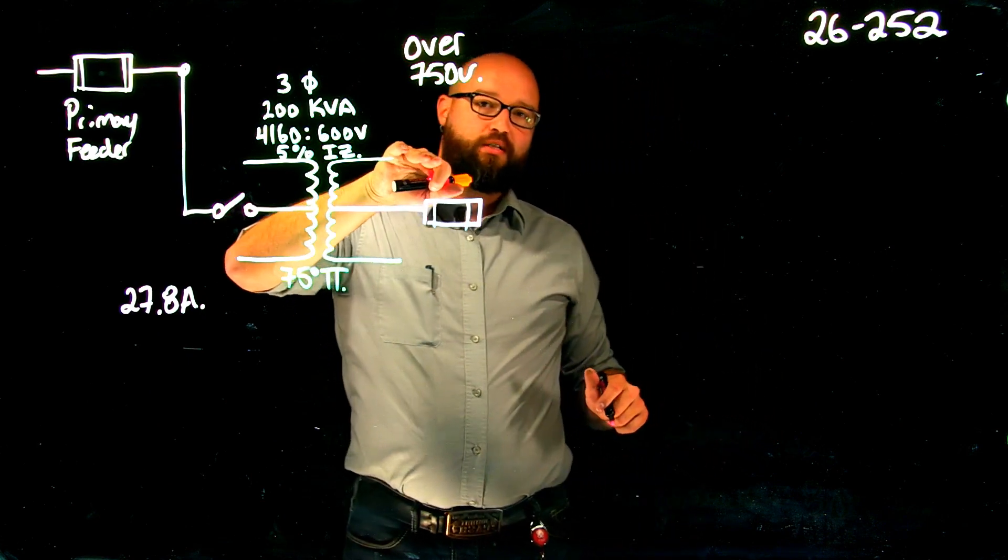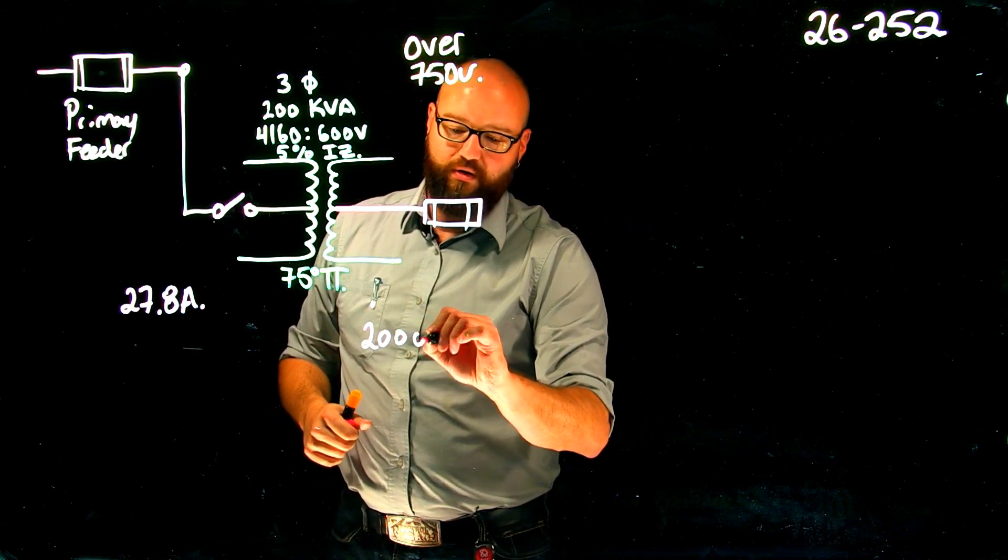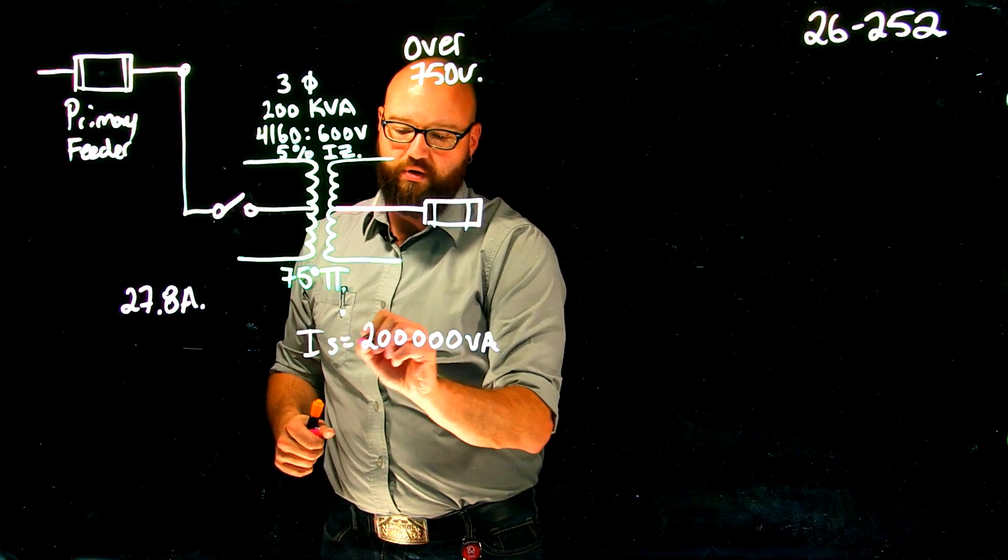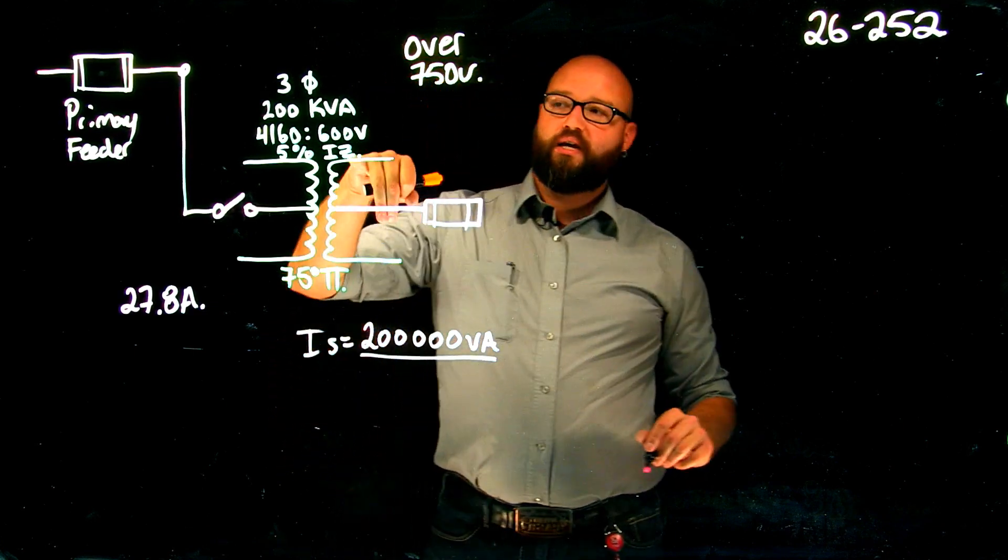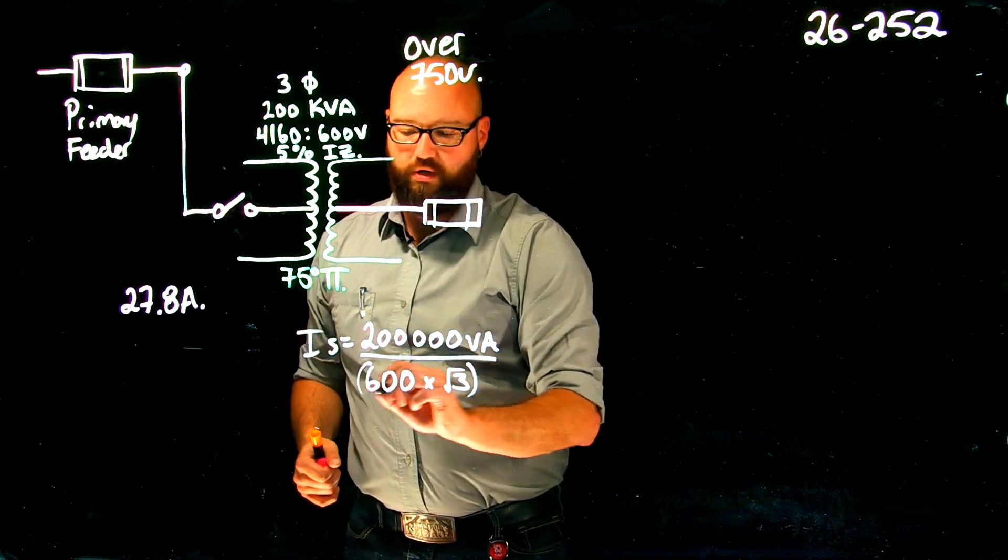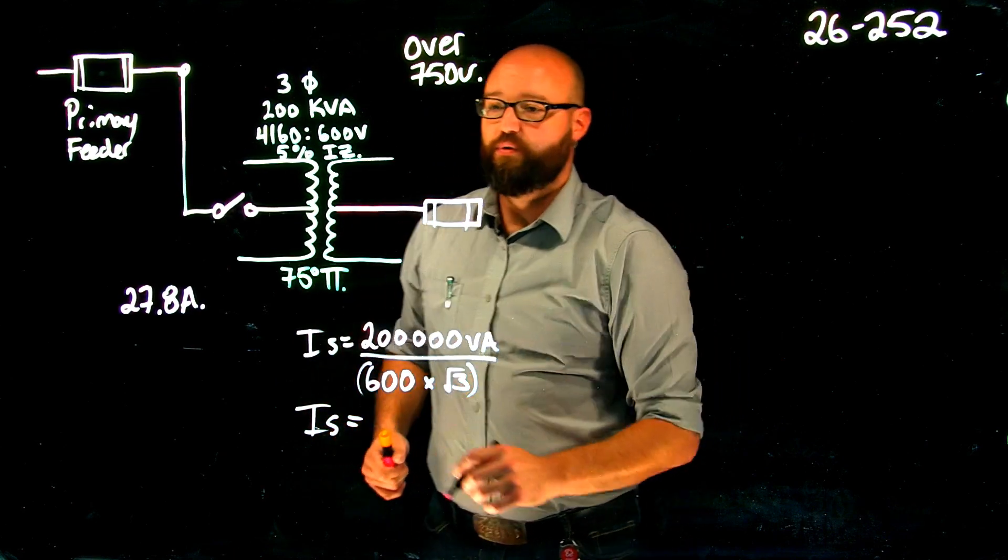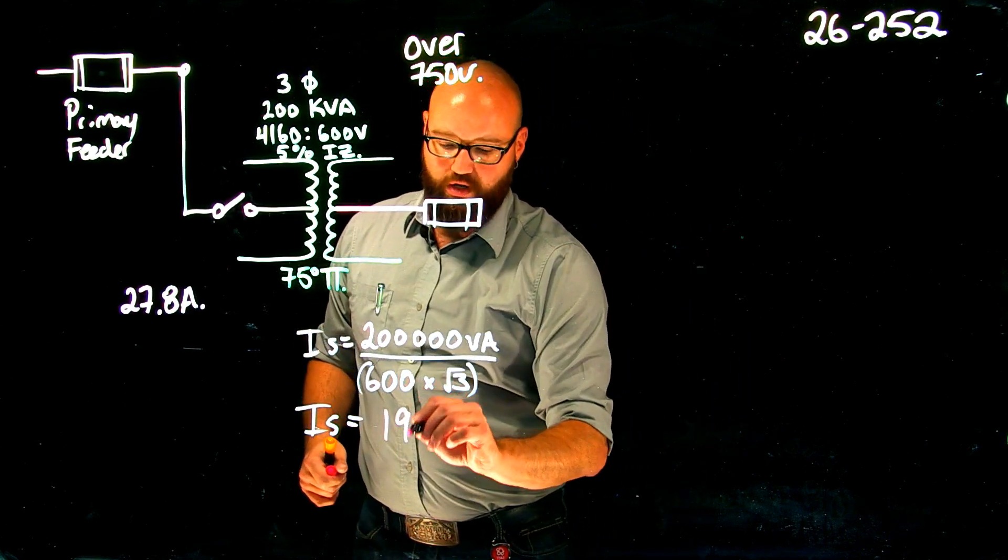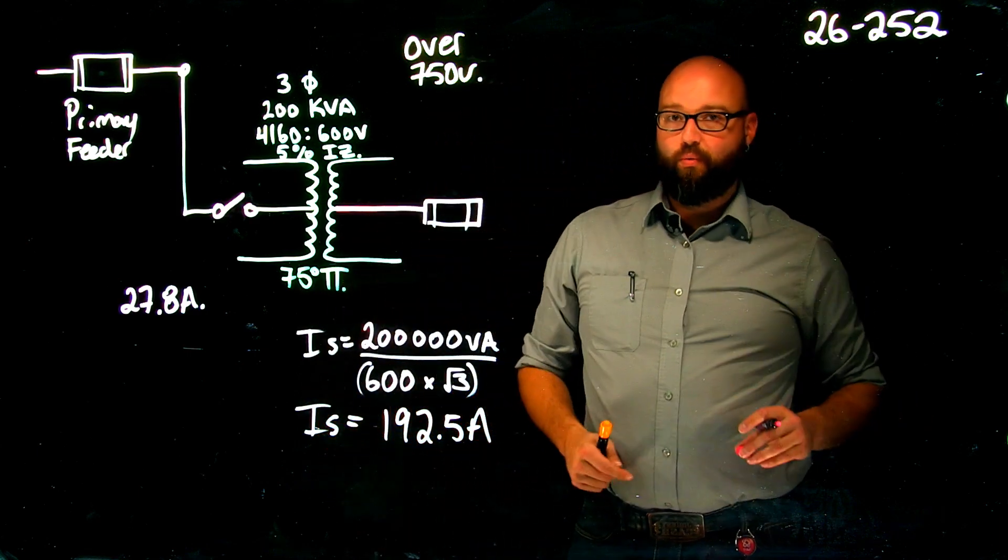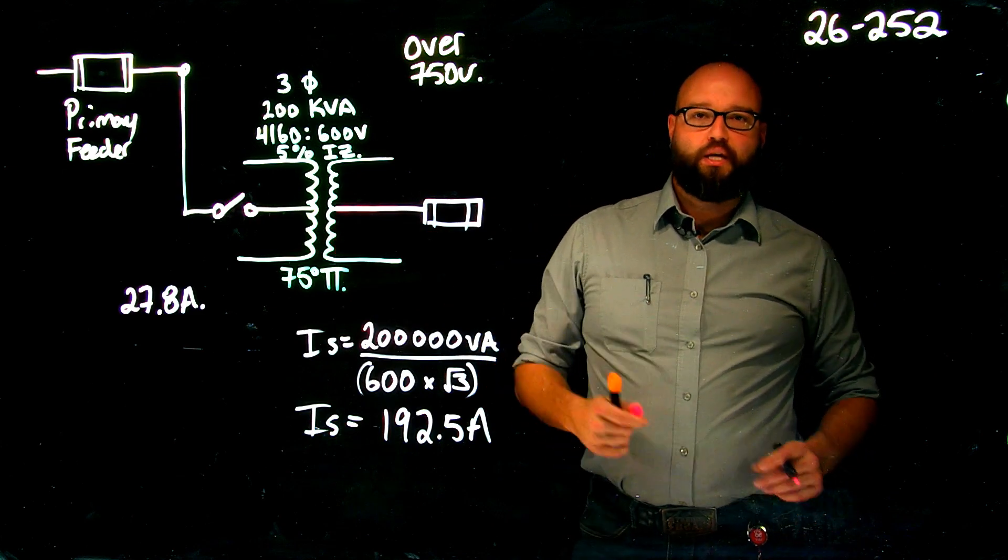We need to figure out what our secondary rated current is as well. We have our 200,000 VA divided by our secondary line voltage of 600 times root three, gives me a rated secondary current of around 192.5 amps rated on the secondary. So we're going to take this information. We're going to go to table 50 and look at table 50.